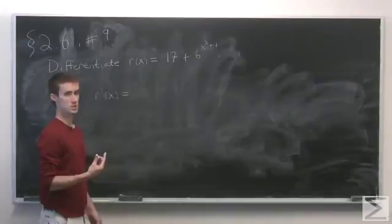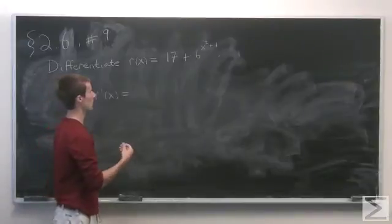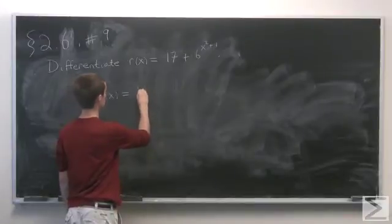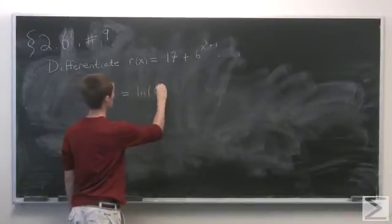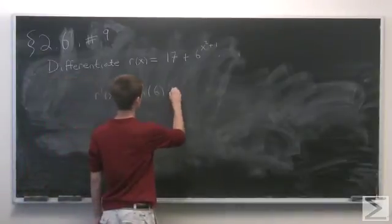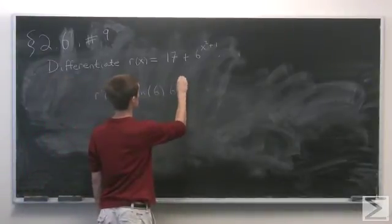Which is the general exponential function together with composition. So first step is to take natural log of our base, which is 6, and repeat the function. So 6 to the x squared plus 1.